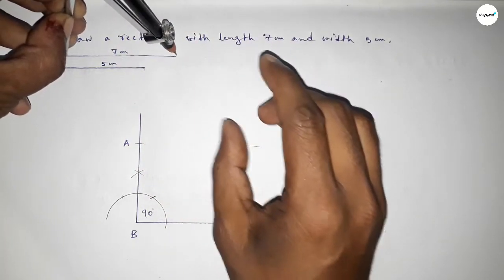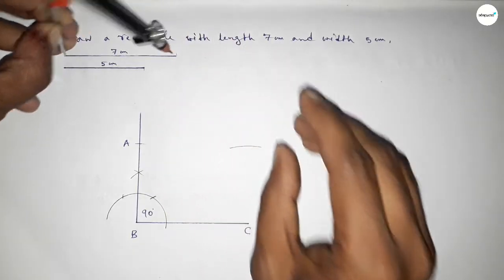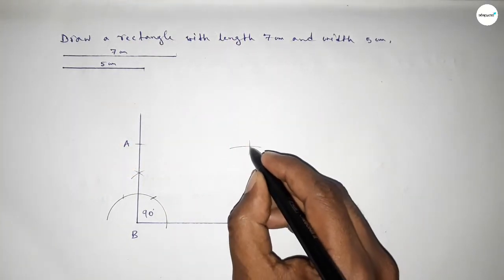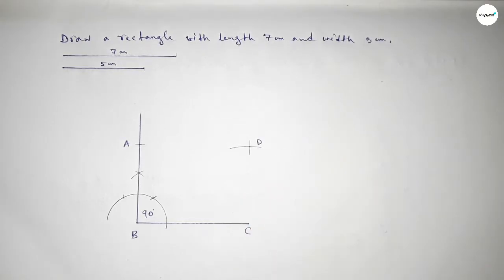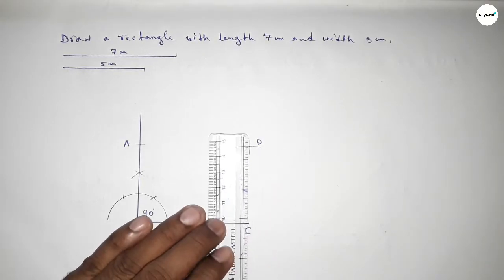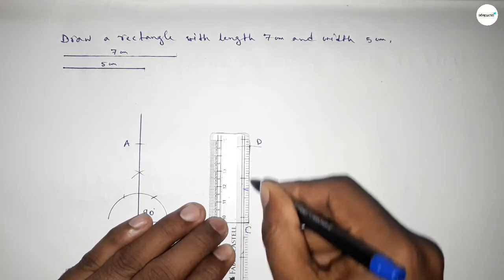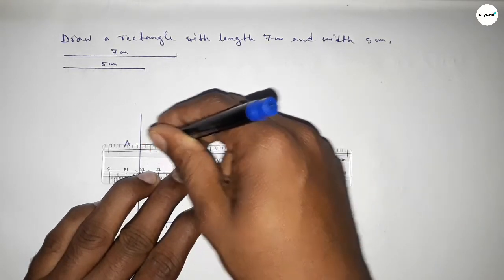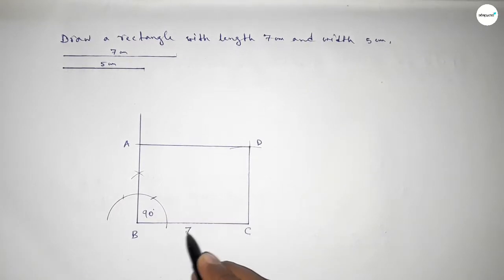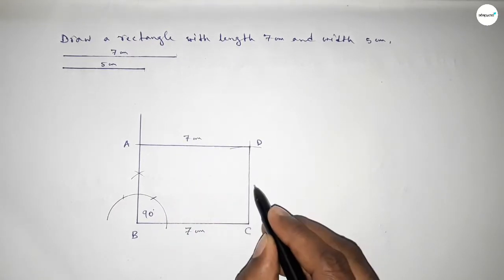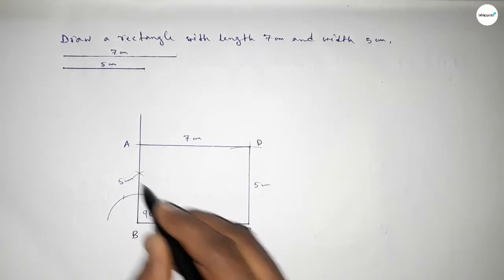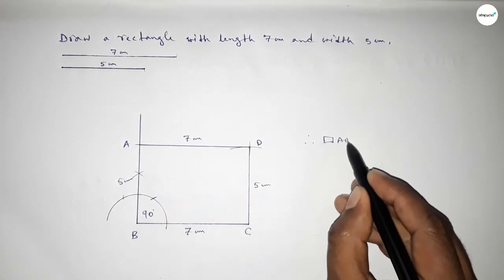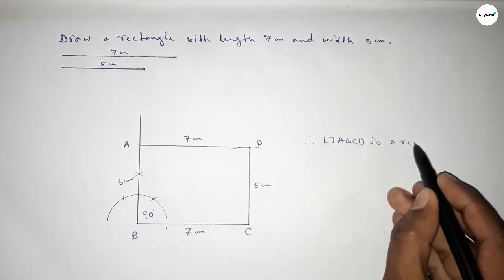Taking the length 7 centimeter using the compass and putting the compass on point A and cutting here, so both curves intersect at point D. Now joining C and D, then joining A and D to get rectangle ABCD. This side is 7 centimeter, this side is 7 centimeter, this side is 5 centimeter, this side is 5 centimeter — therefore rectangle ABCD.